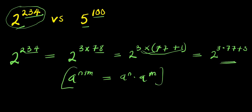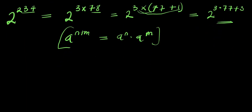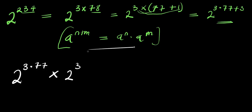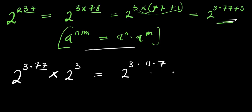From here, we can write 77 as 11 times 7, so we have 2 to the power of (3 times 11 times 7) times 2 to the power of 3. Now applying the identity: if you have a to the power of (n times m), this equals (a to the power n) raised to the power m. So this gives us 2 to the power of 7, raised to the power of 33, times 2 to the power of 3.